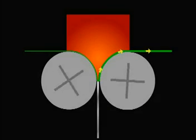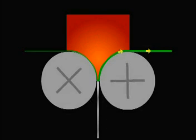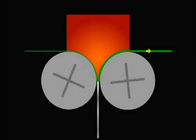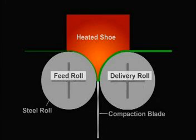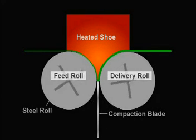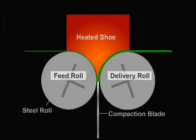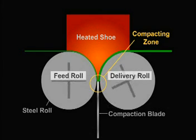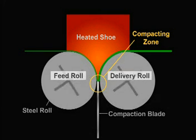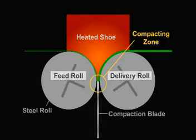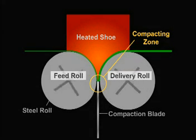A similar but different system design incorporates a compaction blade located below one heated shoe, positioned between the feed and delivery rolls. With this system, the compaction also takes place when the fabric movement is precisely slowed by surface contact in the compaction zone.